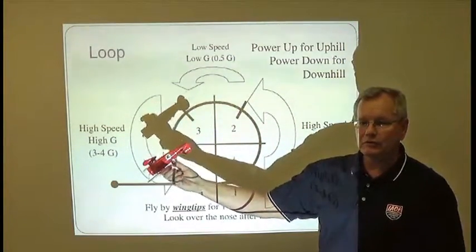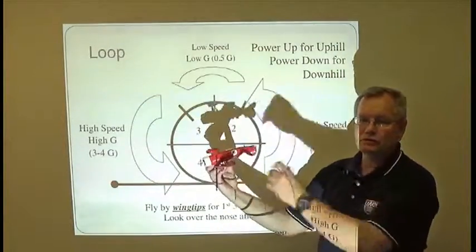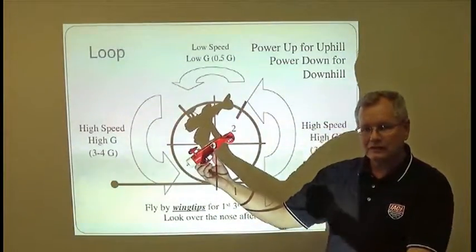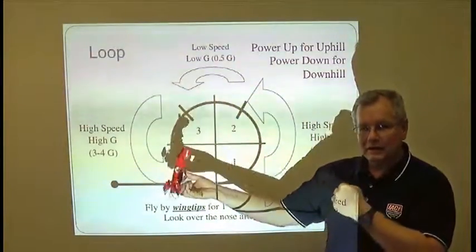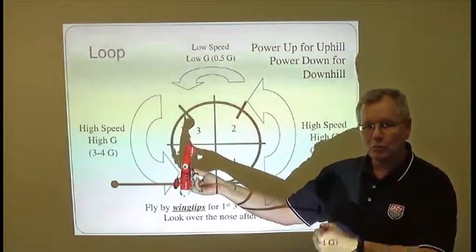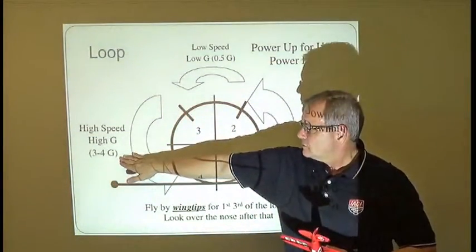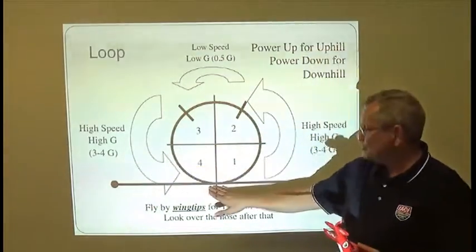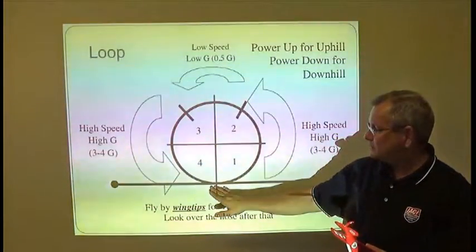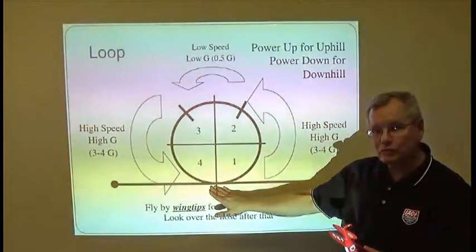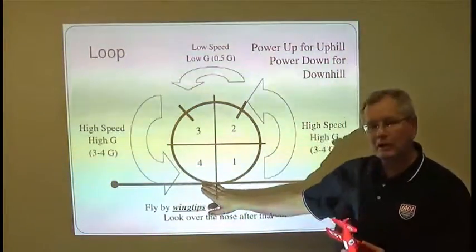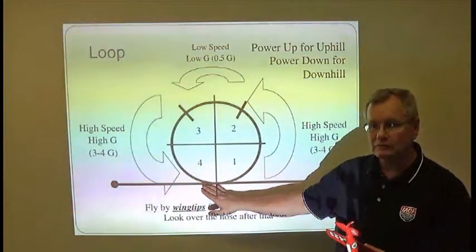After that, then the airplane is going to start speeding up, and here's where you start slowly getting back into getting the stick back. As you increase speed, you're going to be pulling more and more Gs, and you want to get back to what you entered with. So you're going to be finishing at about the same speed that you entered, and you're going to be pulling about the same G as when you entered.